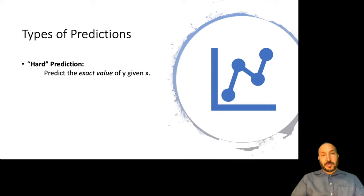So one kind of prediction is a hard prediction and that's where you're trying to predict the exact value of Y given X. So in this case, your model is given a test data point and if Y is binary, it votes yes or no. And if Y is multi-class, it's going to pick one of the classes as a hard decision.